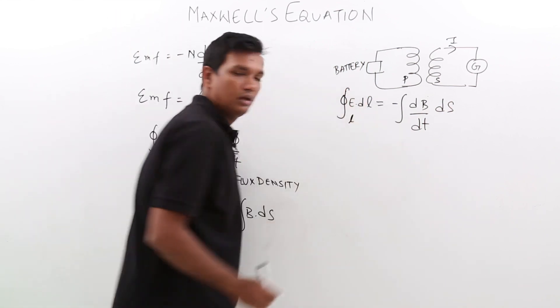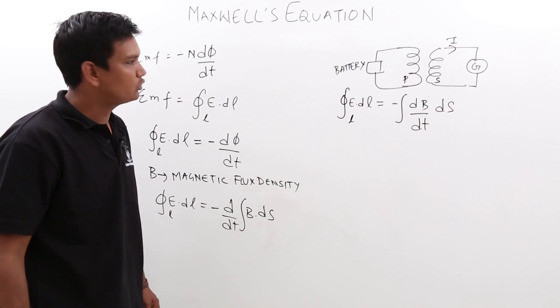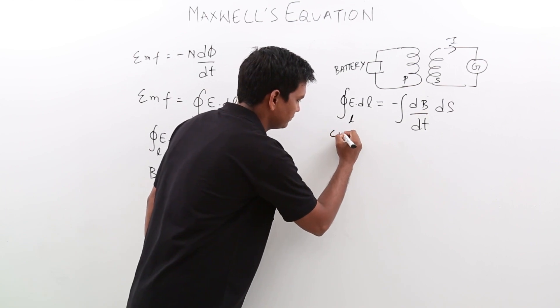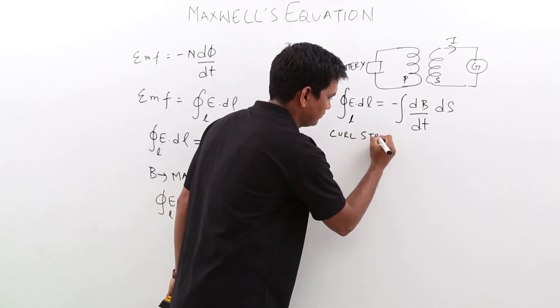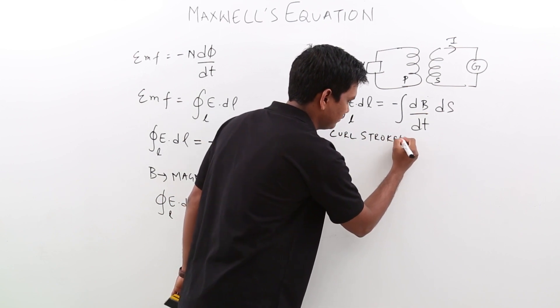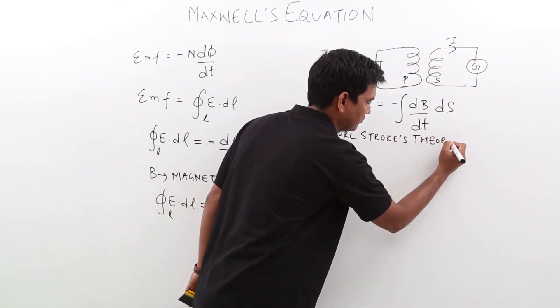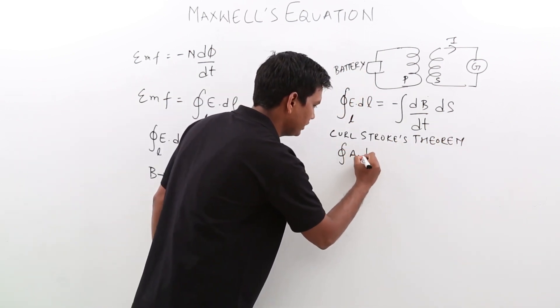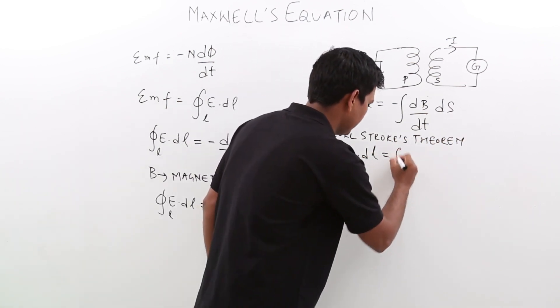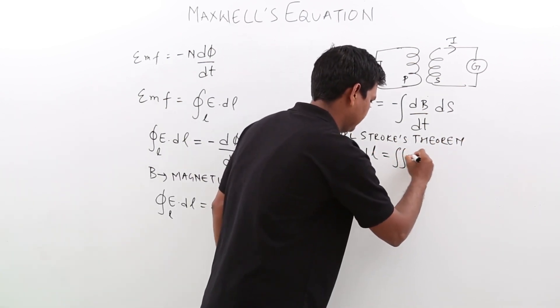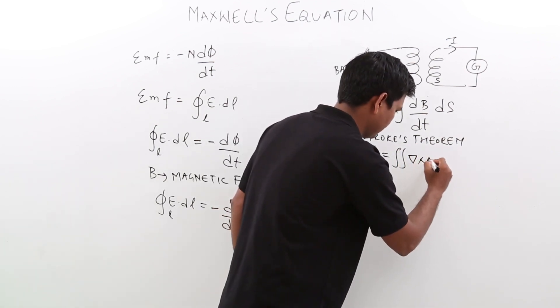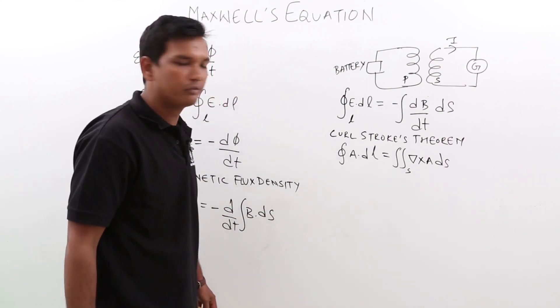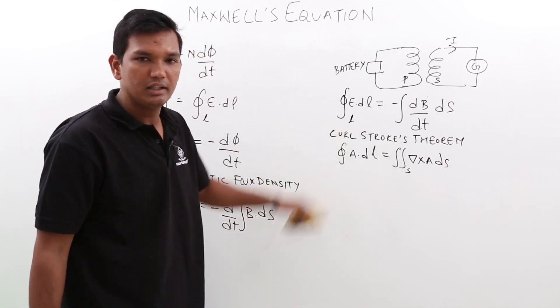We have already seen curl Stokes theorem. We will apply the curl Stokes theorem. What is the curl Stokes theorem? Curl Stokes theorem, we have already know that what is that. Line integral of A dot dl is equal to, the line integral will be converted into a surface integral that what we have already seen in the previous classes. We will apply the curl Stokes theorem here.